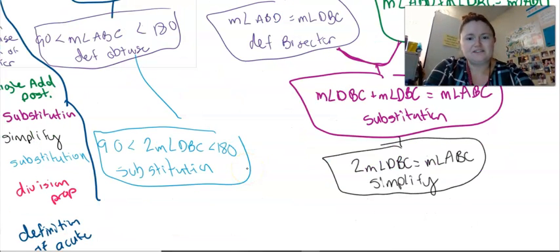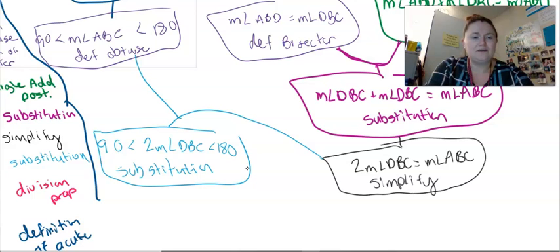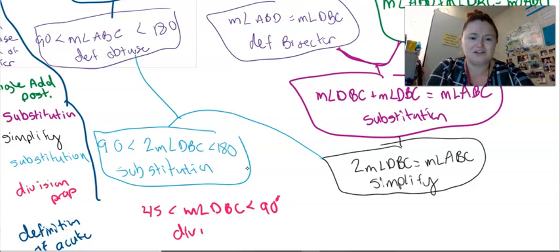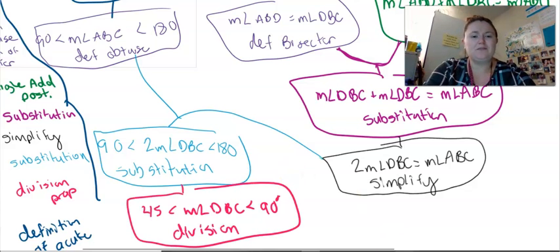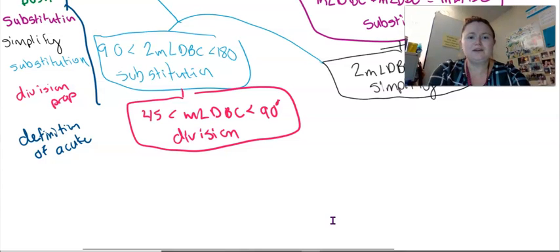And so now I can just take this and continue with it and say, okay, well, if I divide everything in this by two, I'm going to end up with 45 is less than measure of angle DBC, which is less than 90 degrees by division property of equality. Well, it's inequality here, but I'm just going to call it division. And now I know that the measure of angle DBC is less than 90, which is what I'm basically trying to prove.